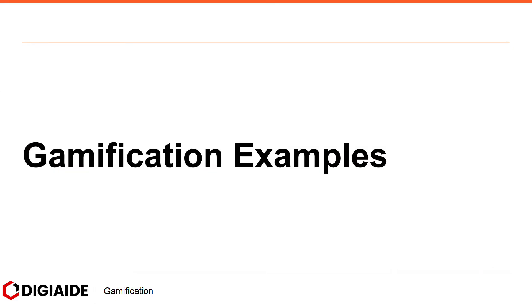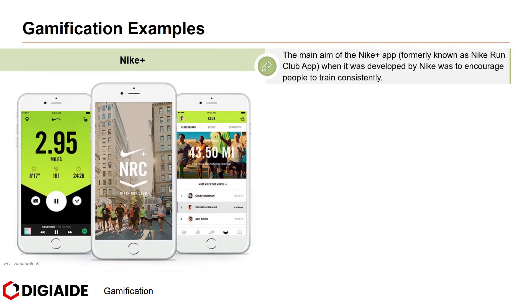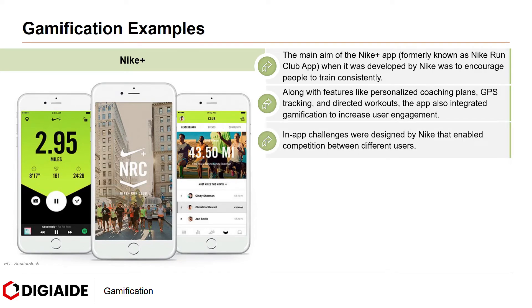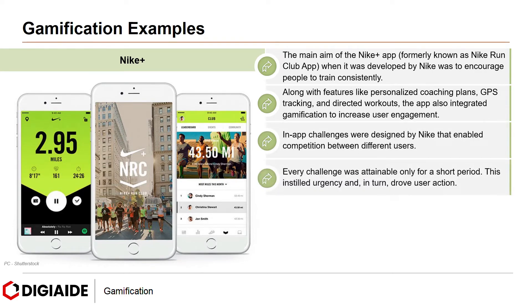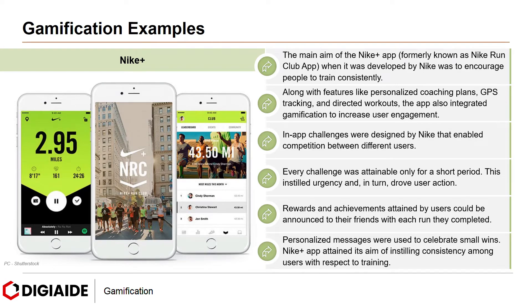Now let's look at gamification examples done by companies. First, Nike. The main aim of the Nike Plus app, formerly known as Nike Run Club app, when developed by Nike, was to encourage people to train consistently. Along with features like personalized coaching plans, GPS tracking and directed workouts, the app also integrated gamification to increase user engagement. In-app challenges were designed by Nike that enabled competition between different users, and every challenge was attainable only for a short period, instilling urgency and driving user action. Rewards and achievements earned by users could be announced to their friends, and personalized messages were used to celebrate small wins. The Nike Plus app achieved its aim of instilling consistency among users with respect to training, all through gamification.